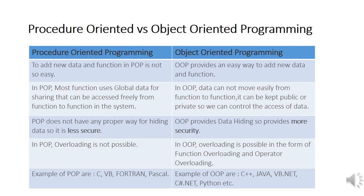Further differences: adding new data and functions is not easy in POP but is easy in OOP. In POP most functions use global data accessible freely; in OOP data can be kept public or private, giving controlled access. POP is less secure; OOP is more secure. Overloading is not possible in POP but in OOP you can perform function overloading and operator overloading. Examples of POP languages are C, Visual Basic, Fortran, Pascal. Examples of OOP languages are C++, Java, VB.NET, C#.NET, and most modern programming languages.